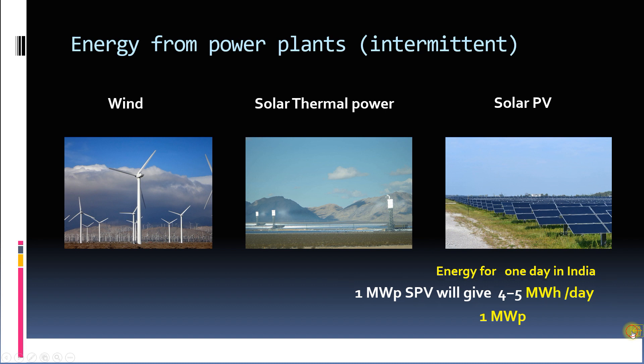Similarly, 1 megawatt rated wind power plant on yearly basis only supplies energy about 30% of rated capacity and gives variable amount of power throughout the day. This variation is due to non-uniform wind velocity throughout the day.